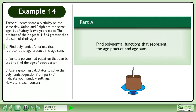Three students share a birthday on the same day. Quinn and Ralph are the same age, but Audrey is two years older. The product of their ages is 11,548 greater than the sum of their ages.